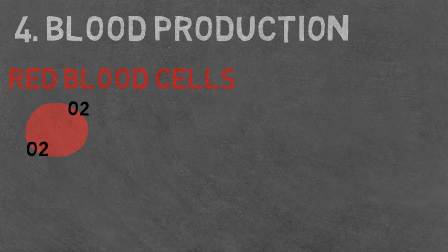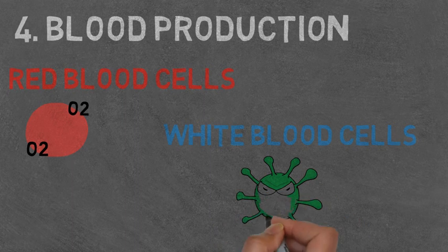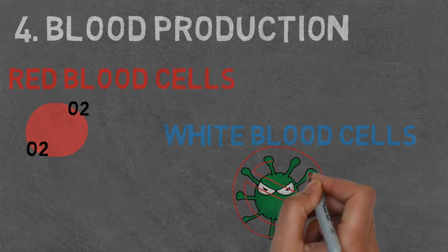Red blood cells consist of hemoglobin, which carries oxygen around the body and to the muscles. White blood cells are a vital part of your immune system, detecting and dealing with infections.